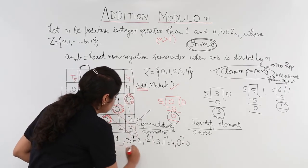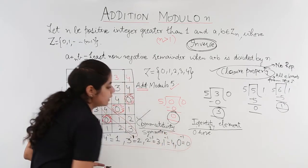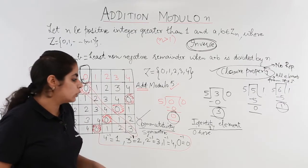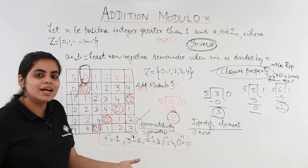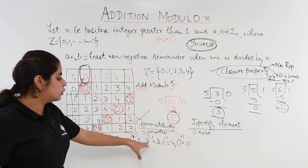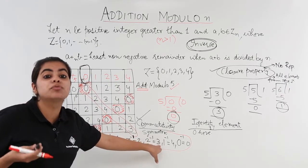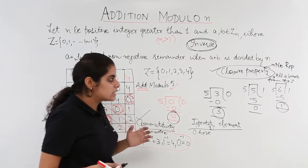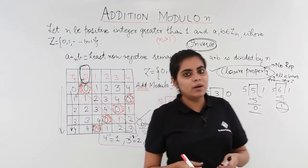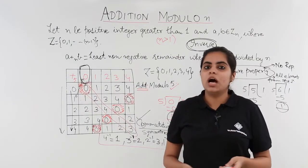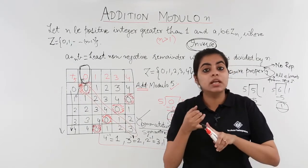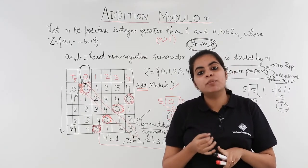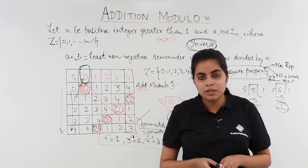So we have found all inverses: inverse of 0 is 0, inverse of 2 is 3, inverse of 4 is 1. In this video, we've seen all about finding the inverse, the identity element, and commutativity from a composition table.